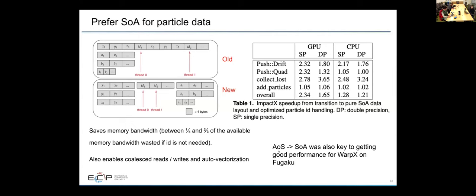Doing this transition was also really important to getting good performance on Fugaku for WarpX, because on Fugaku getting the compiler to vectorize for you is very important to getting good performance. And it's not good at doing that unless you're storing struct of array style. So really prefer that data layout.